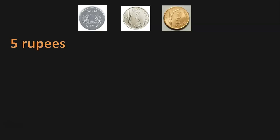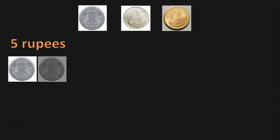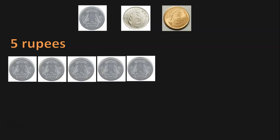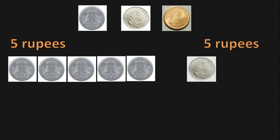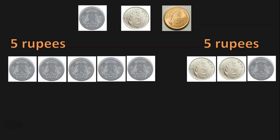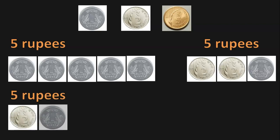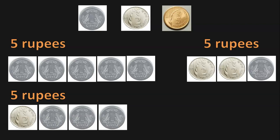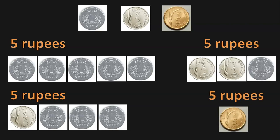The next task uses a 1-Rupee coin, a 2-Rupee coin, and a 5-Rupee coin. Let us try different possibilities to make 5-Rupees. Five 1-Rupee coins make 5-Rupees. Another possibility: two 2-Rupee coins plus one 1-Rupee coin (2+2+1=5). Another: a 2-Rupee coin with three 1-Rupee coins also makes 5-Rupees. And the simplest method is to use the 5-Rupee coin directly.